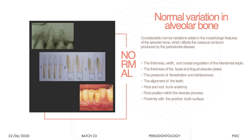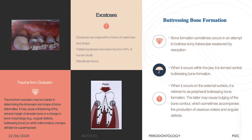One of the ways that determines bone morphology is exostosis. We have seen exostoses such as palatal, maxillary, or mandibular tori — a bulbous bone formation that rounds the supporting alveolar bone. This is a change in bone morphology that should not be taken as a pathology. Another form is buttressing bone formation, which sometimes occurs as an attempt to reinforce bone trabeculae in weakened resorption regions.